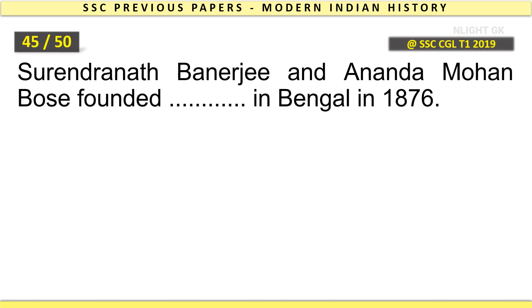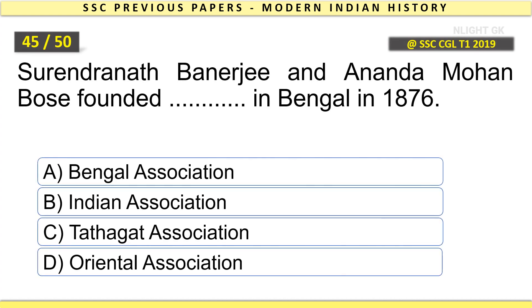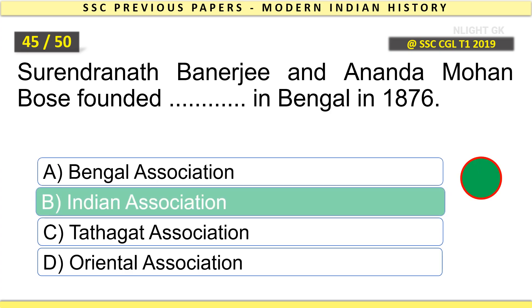Surendranath Banerjee and Anand Mohan Bose founded the Indian Association in Bengal in 1876.